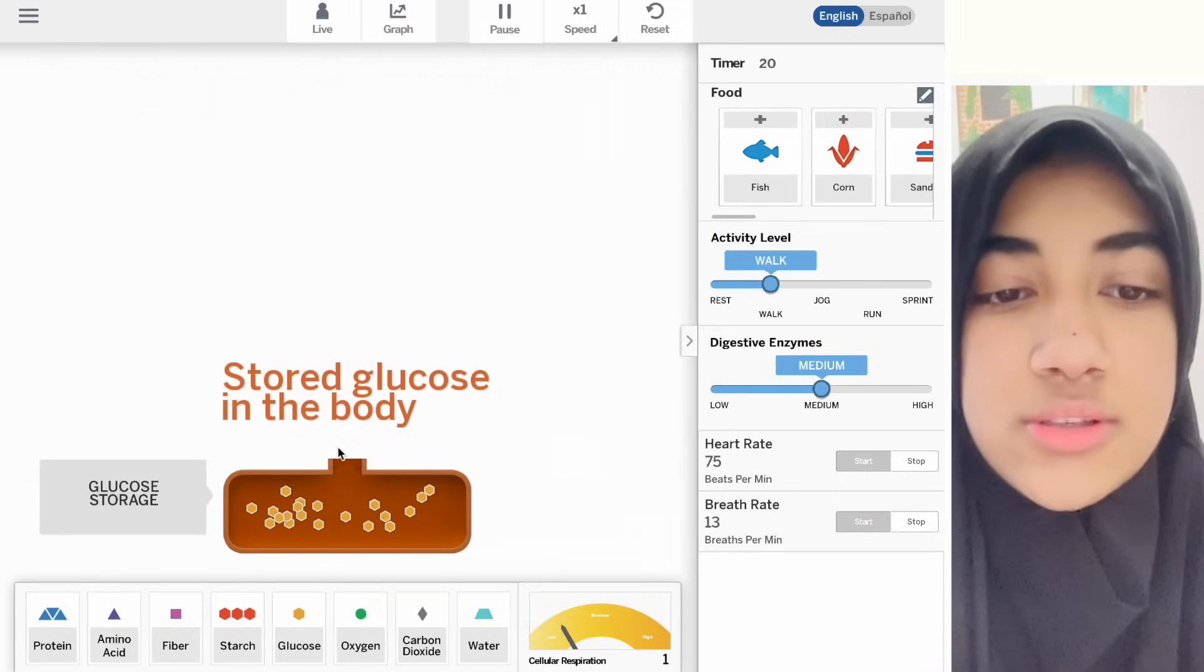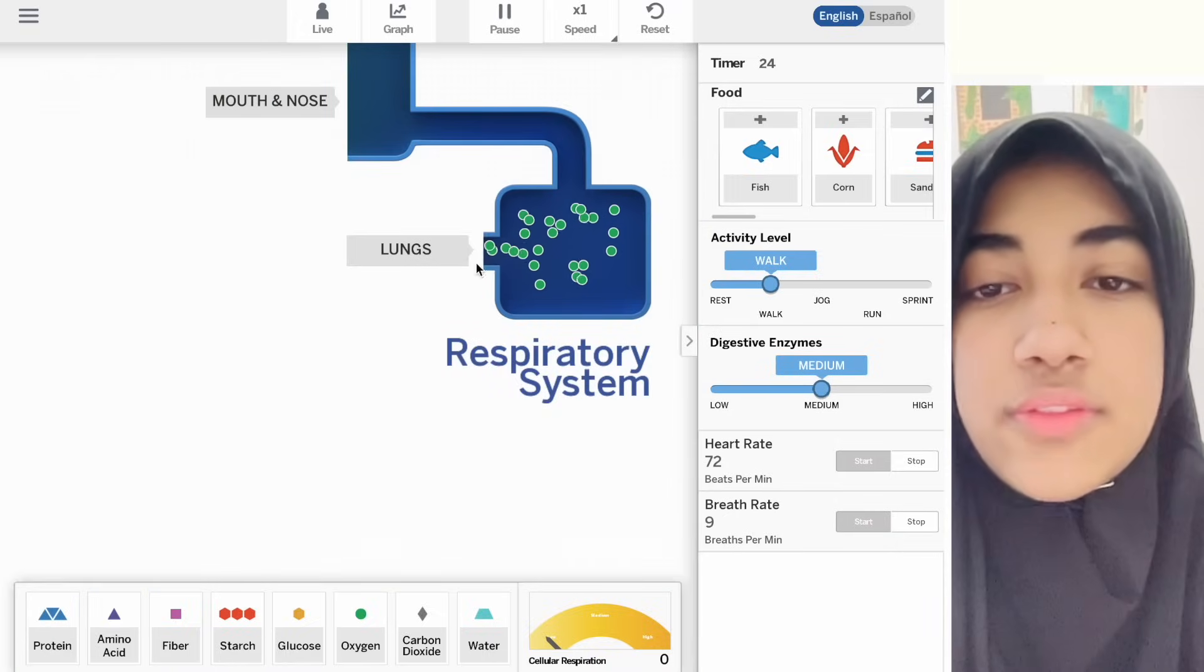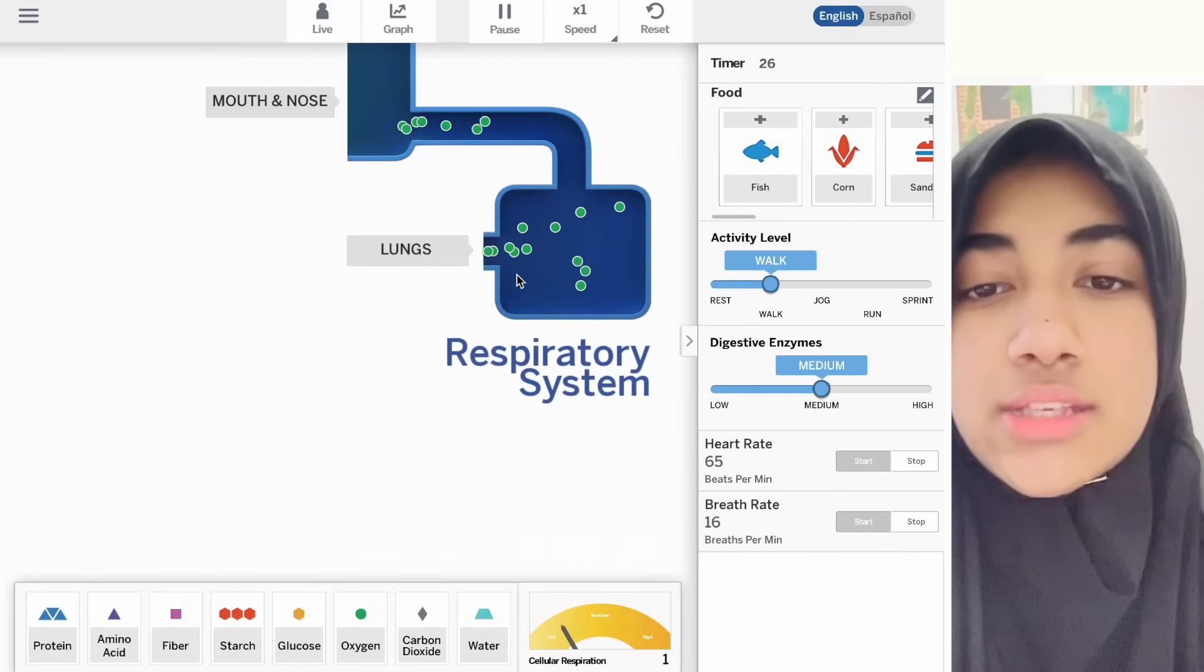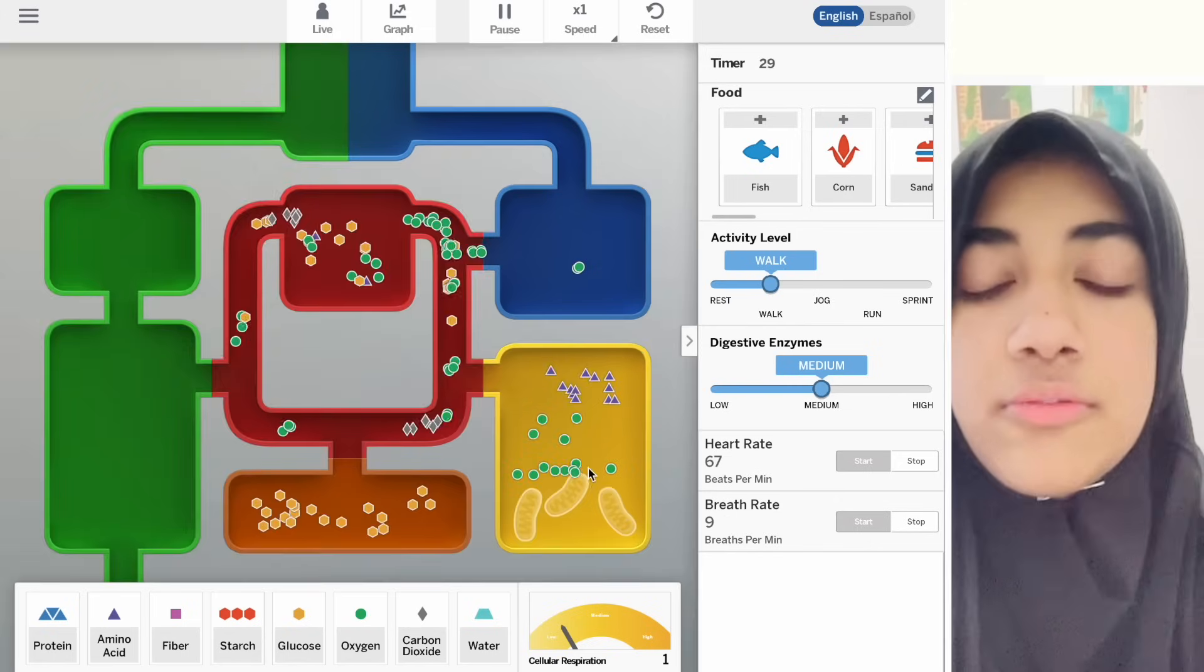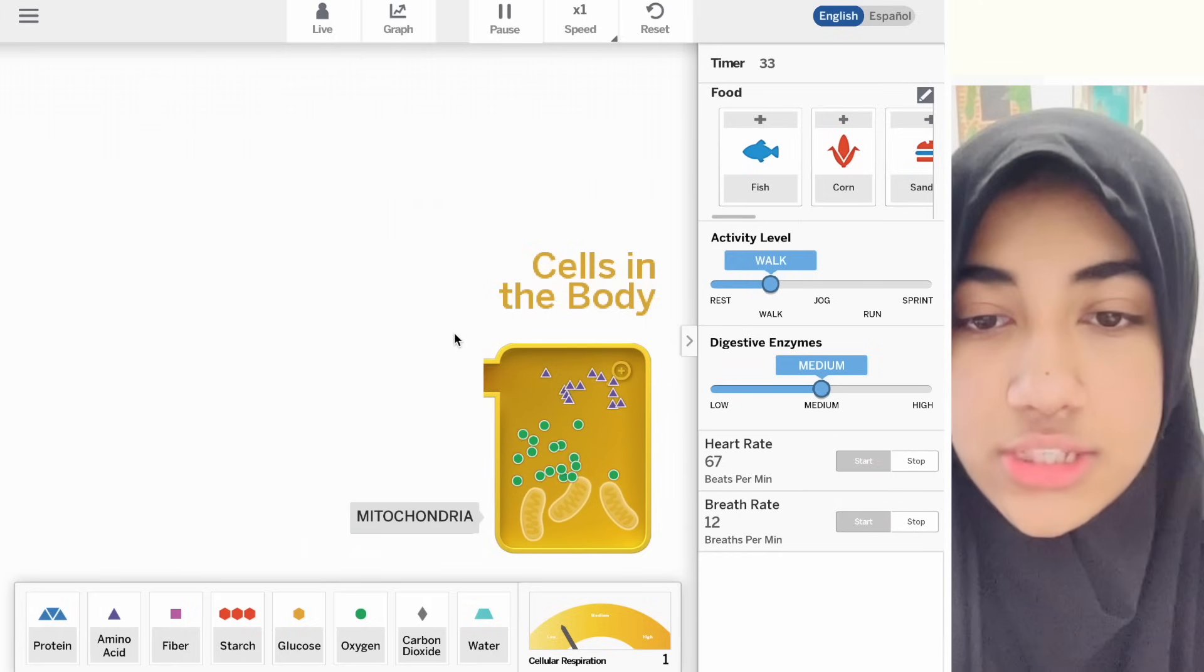This is our glucose in the body or glucose storage. This is the mouth and the nose and the lungs which is our respiratory system. And finally, this is our cells in the body or the mitochondria.